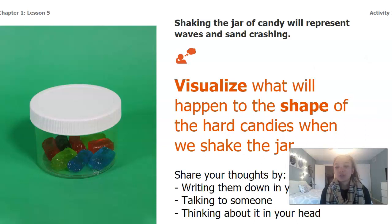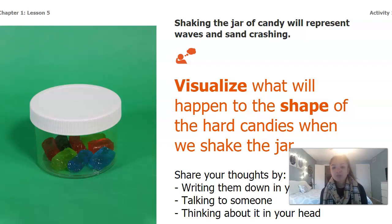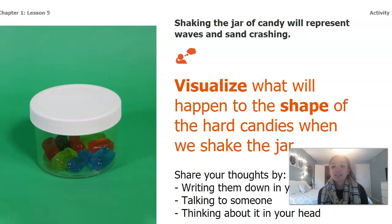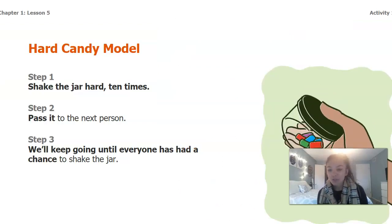What we'll be visualizing is: if we had this jar with the candies in it and we shook the jar of candy, that's going to represent waves and sand crashing together. Before we look at the next picture, I want you to visualize in your head what you think will happen to the shape of the candies when we shake the jar. Go ahead and pause this video and answer the question by writing it down in your packet, talking to somebody at home, or thinking about it in your head.